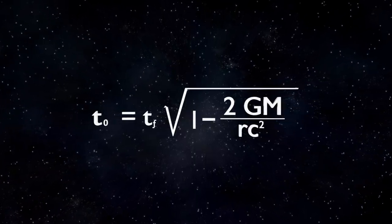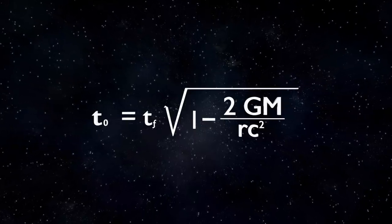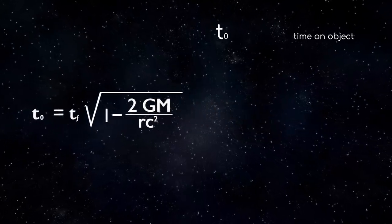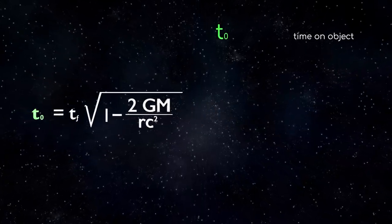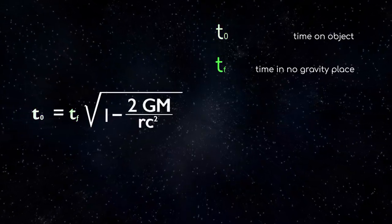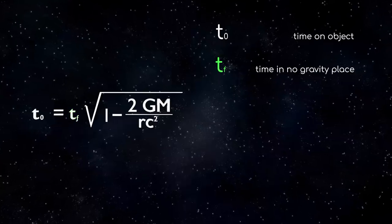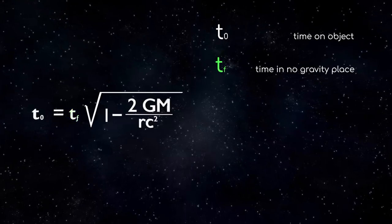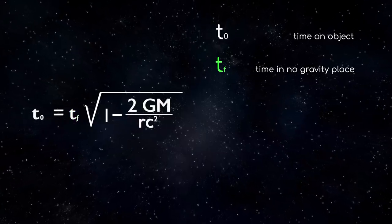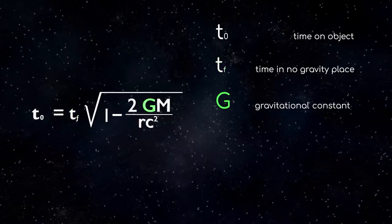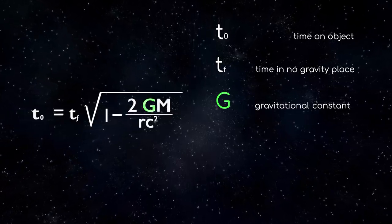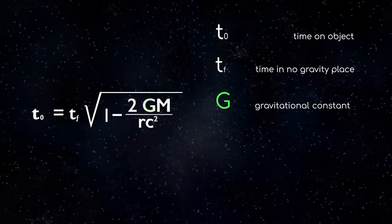We will be using this equation a lot in the rest of the video, so let's try to understand it. It looks a little scary, but it's not as bad as it looks. t0 is the answer we're looking for, how much time would pass on the object we're interested in, in this case the Earth. Tf is how much time would pass in a place completely unaffected by gravity. Such a place doesn't exist, by the way, but it is our hypothetical stationary clock. G is the gravitational constant, a number they added to basically make the sums work out. We're not going to worry about where it came from, all we're interested in is the fact it's always this.